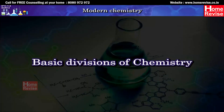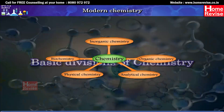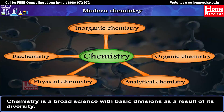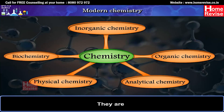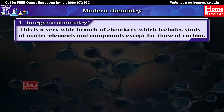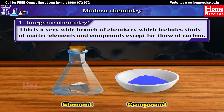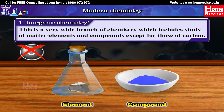Basic Divisions of Chemistry. Chemistry is a broad science with basic divisions as a result of its diversity. 1. Inorganic Chemistry: This is a very wide branch of chemistry which includes the study of matter, elements and compounds except for those of carbon.